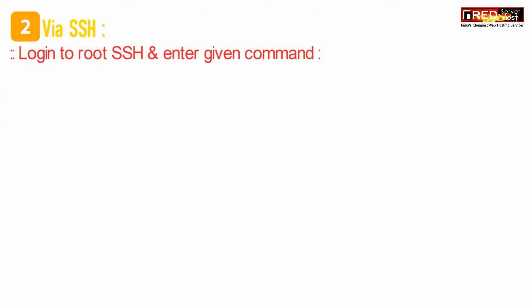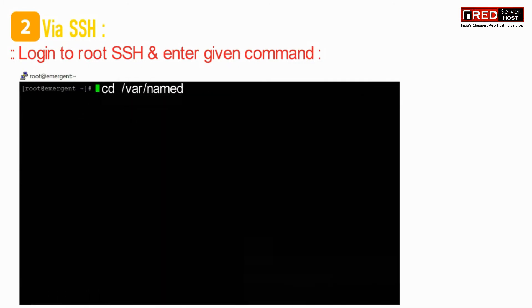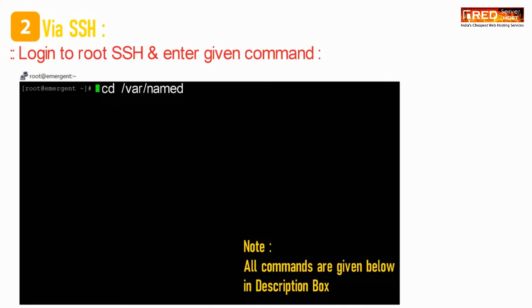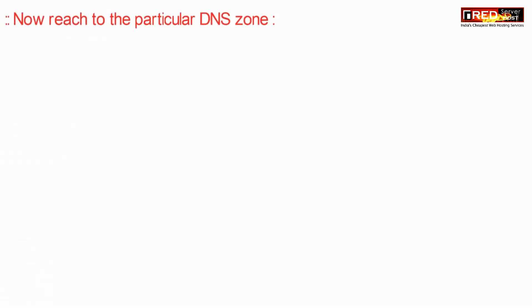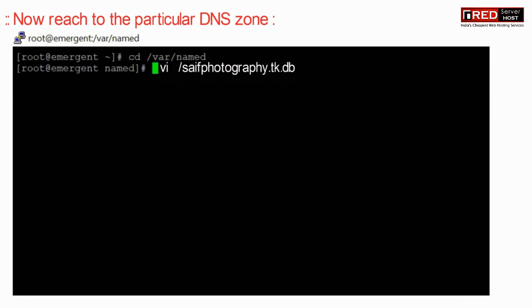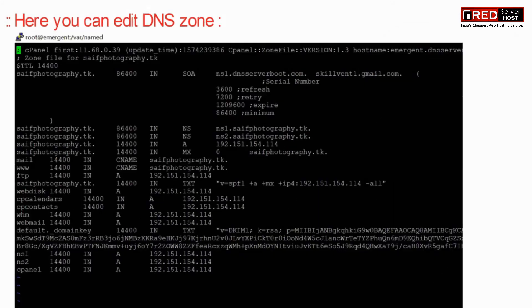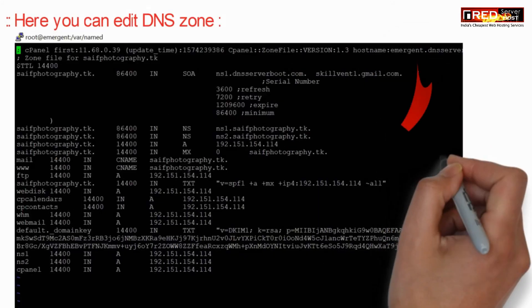The second method is to do the same thing via SSH. Login to root SSH and then enter the below command to reach the named folder. In order to edit a particular DNS zone, you need to use vi followed by the name of the DNS zone file you would like to edit. From here you can modify anything you like.